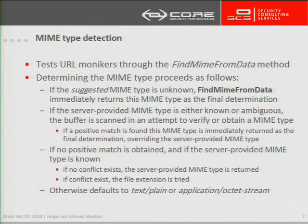If the findMIME from data function determines a file to be a binary file, the server-provided MIME type will be used. So if there is a conflict — if the server-supplied content type doesn't match the base content type, for example for an HTML file — there will be a mismatch. The algorithm will keep trying to determine the actual file type by trying the extension of the file, and if there is no match in the Windows registry, the content type will be defaulted to text.